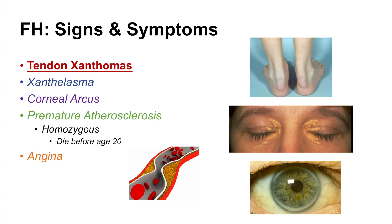Other symptoms include angina — chest pain — because coronary arteries are being blocked and undergoing atherosclerotic buildup. Aortic stenosis can also occur; there is an increased risk of aortic stenosis with familial hypercholesterolemia.